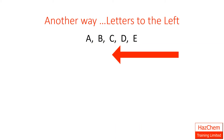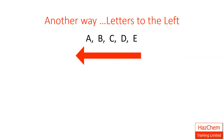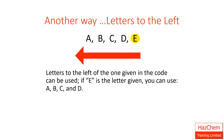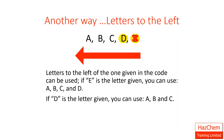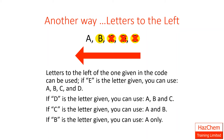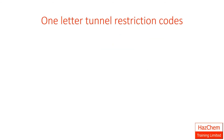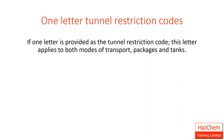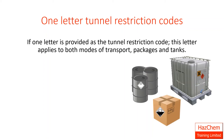Another way to do it is letters to the left. Letters to the left of the one given in the code can be used. If E is the letter given, you can use A, B, C and D as they come to the left of E. If D is shown, you can use A, B and C. If C is shown, you can use A and B. And if B is shown, you can use A only. The results are exactly the same. If one letter is provided as the tunnel restriction code, this letter applies to both modes of transport — both packages and tanks.